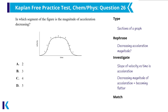The answer choices don't include every section, only two through five, so I'll evaluate those for a section where the line segment becomes more flat. That's where I find section three: it begins steeper and becomes more flat, meaning that the magnitude of acceleration is decreasing. B must be the correct answer. Section two and four had fairly constant accelerations, since their slopes did not change much from beginning to end. Section four experienced the least total change in acceleration since it is the flattest section, but that's not what the question asked for — the question wants a section with a decreasing magnitude of acceleration, not the lowest magnitude.